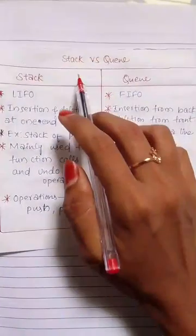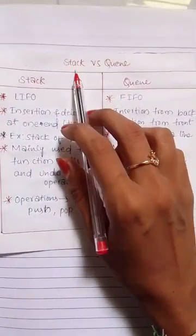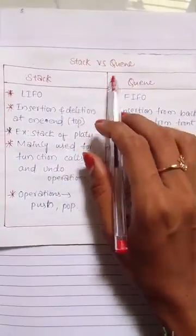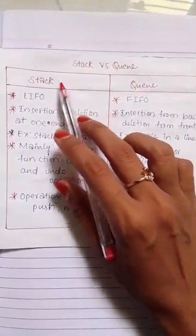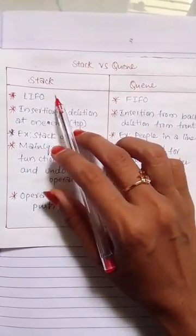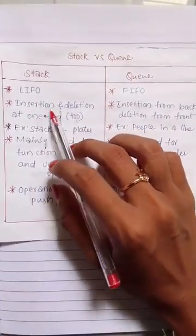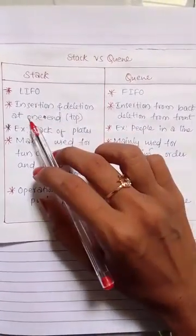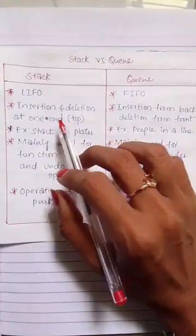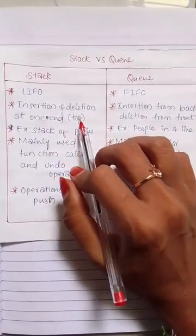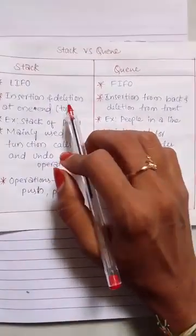Hello everyone. In this short I will explain the difference between stack and queue. Stack is last in first out, which means the insertion and deletion happen at one end, that is at the top.